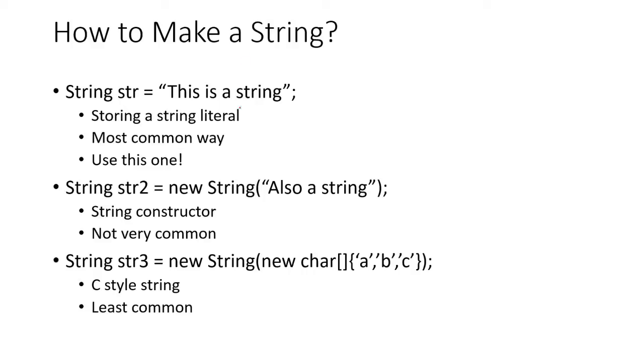So how do we make a string? This method right here is probably the most commonly used and preferred method. We simply declare our string variable like we do any other variable with the type first, the variable name, the equal sign, and then this time we have the string literal, which is the text inside of it: 'This is a string.' Surrounding them, we have these quotation marks that just indicate where the string starts and ends, and then of course, our semicolon to finish it off.